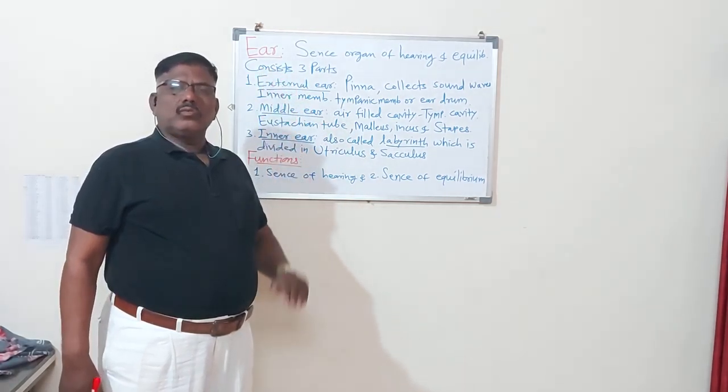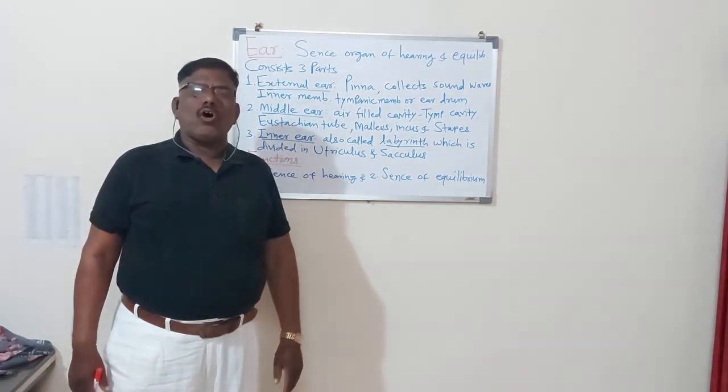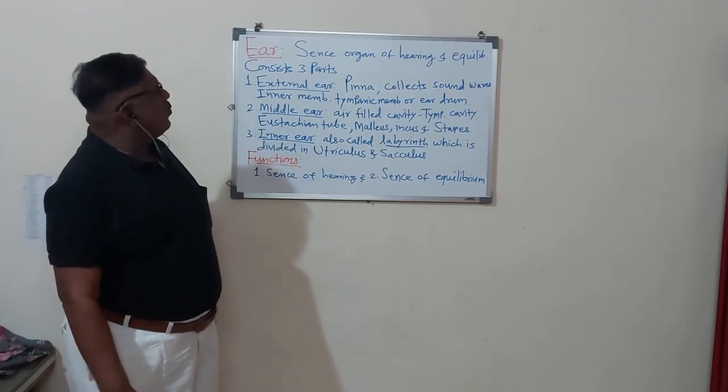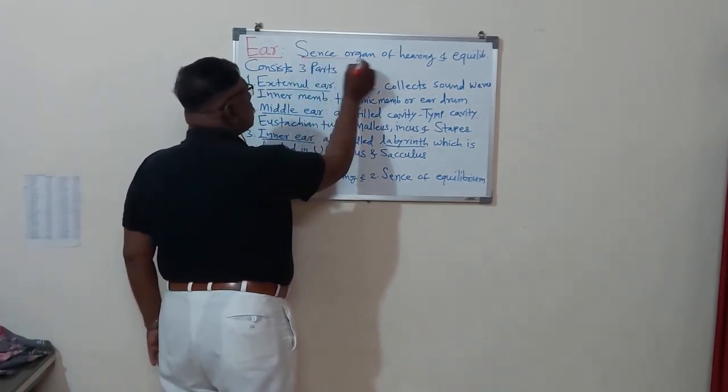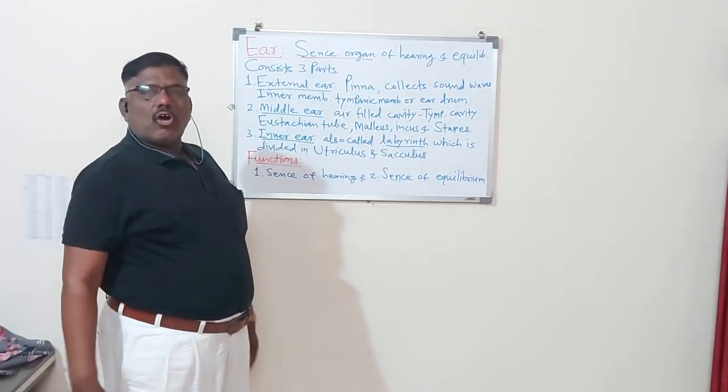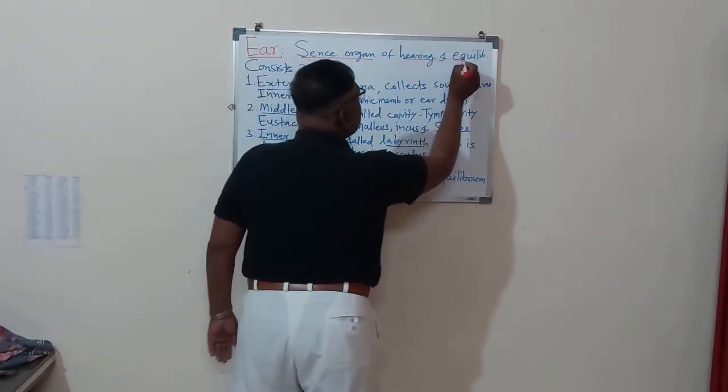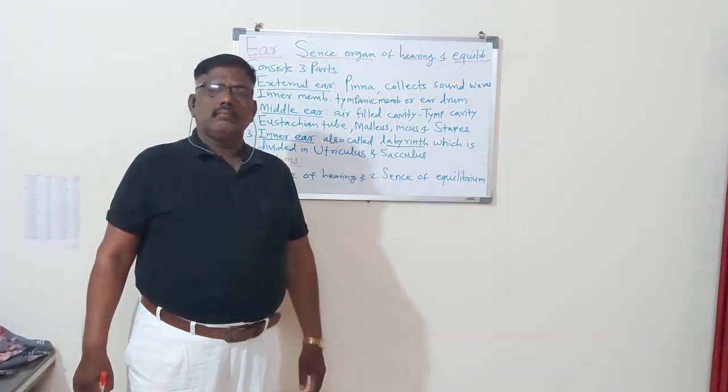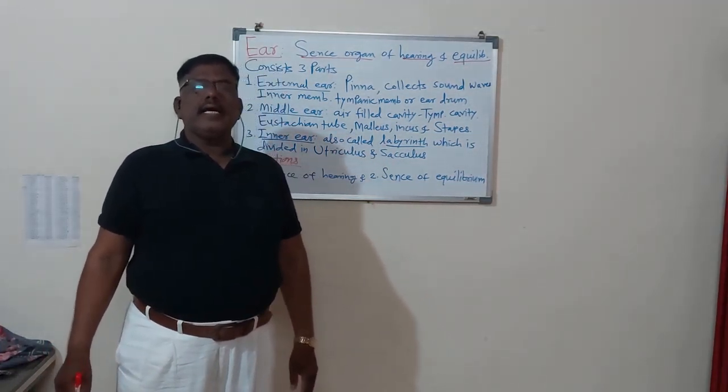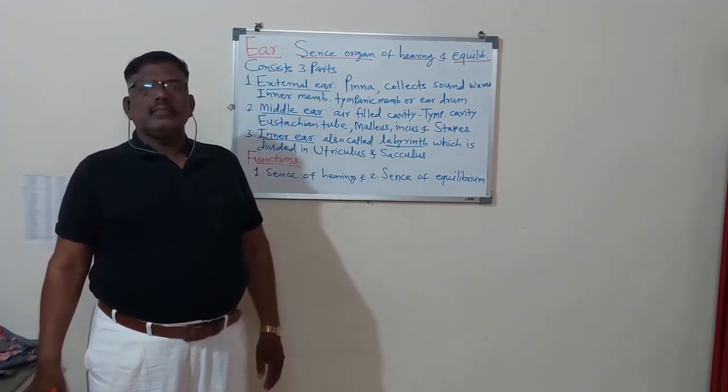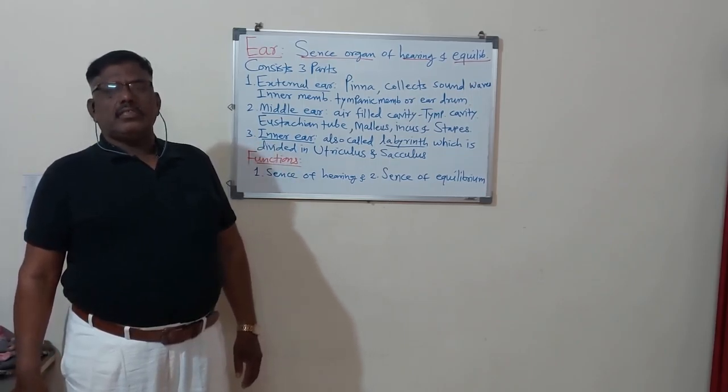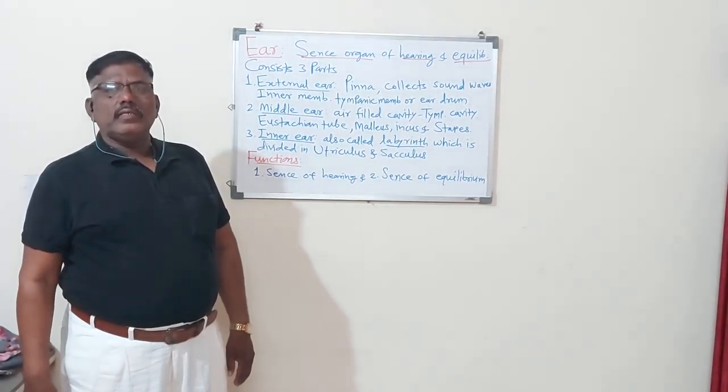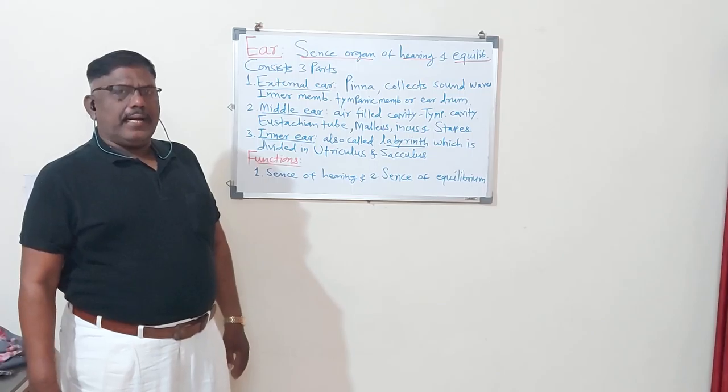What is the ear? So remember, ear is an organ of hearing and equilibrium. It is a sense organ and sense organ for hearing and equilibrium. Remember the definition of ear is, ear is a sense organ of hearing and equilibrium.